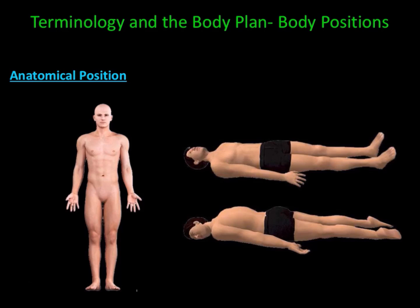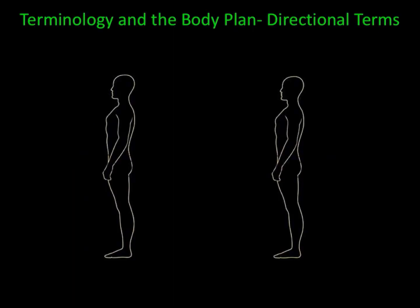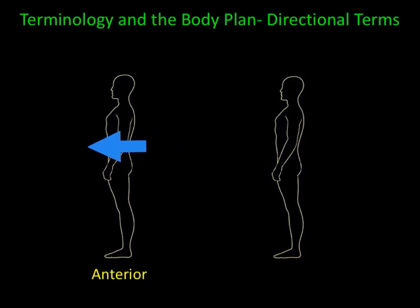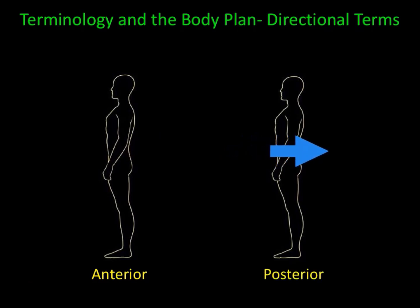The position of lying on your back is supine. The position of lying on your belly is prone. Directional terms help reference body parts to one another. They come in pairs and their meanings are opposites to one another. Towards the front is anterior. Towards the back is posterior. For example, the nose is anterior to the ear and the ear is posterior to the nose.